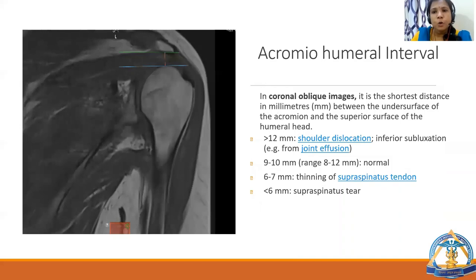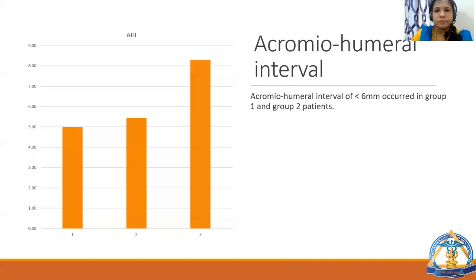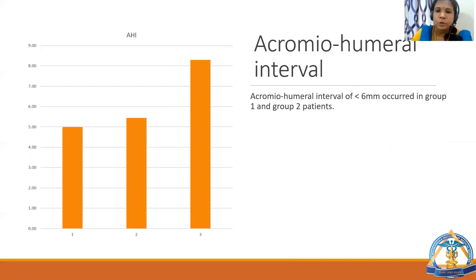The acromial humeral interval was also calculated on coronal oblique image. It is the shortest distance in millimeters between the undersurface of the acromion and the superior surface of the humeral head. Less than 6 mm indicates supraspinatus tear. The graph shows acromial humeral interval of less than 6 mm in Group 1 and Group 2 patients, that is, supraspinatus pathology and subacromial impingement pathology patients.